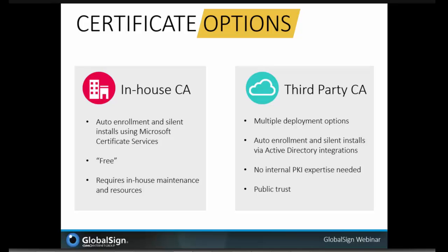An additional benefit for certain use cases where public trust is needed: when you get a certificate from a public certificate authority like GlobalSign, those roots are already widely trusted in operating systems and browsers. There's no need for a separate function of trusting private trust anchors, and especially if you're dealing with B2B or B2C transactions, there's a much lower cost associated with creating trust among constituents who are not leveraging the public roots in the browsers they're using to access applications.